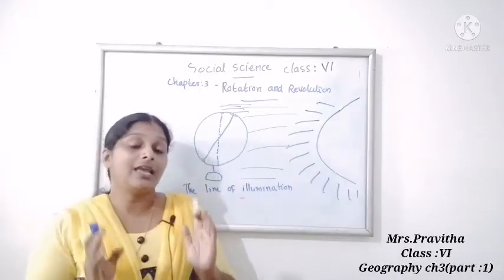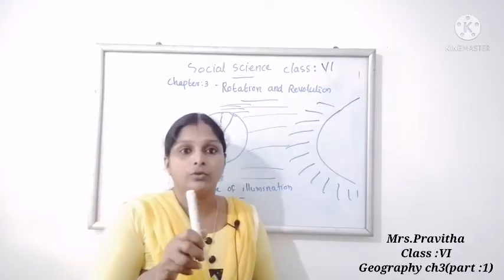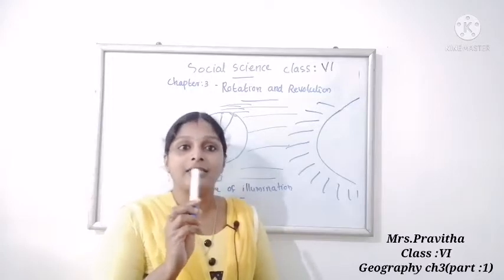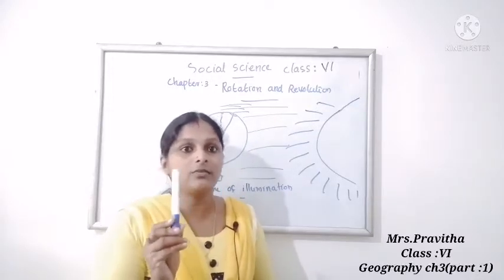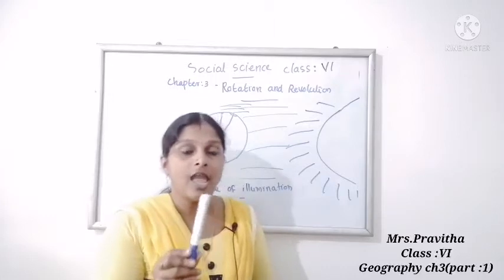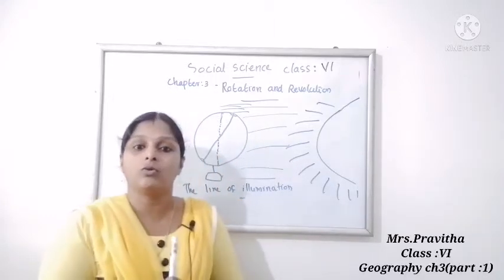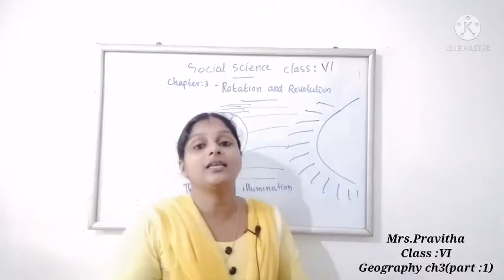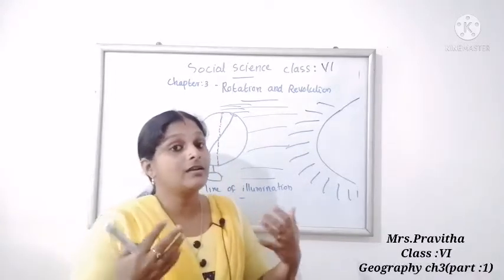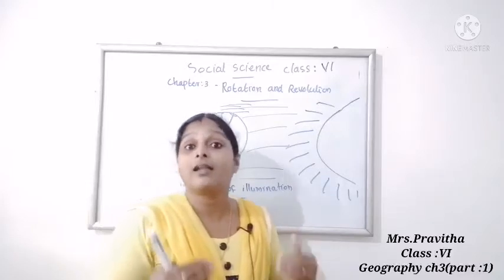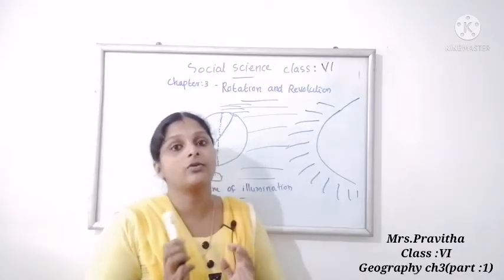Earth rotates in an anti-clockwise direction — not clockwise. Because our rotation is anti-clockwise, sunrise is in the east and sunset is in the west.